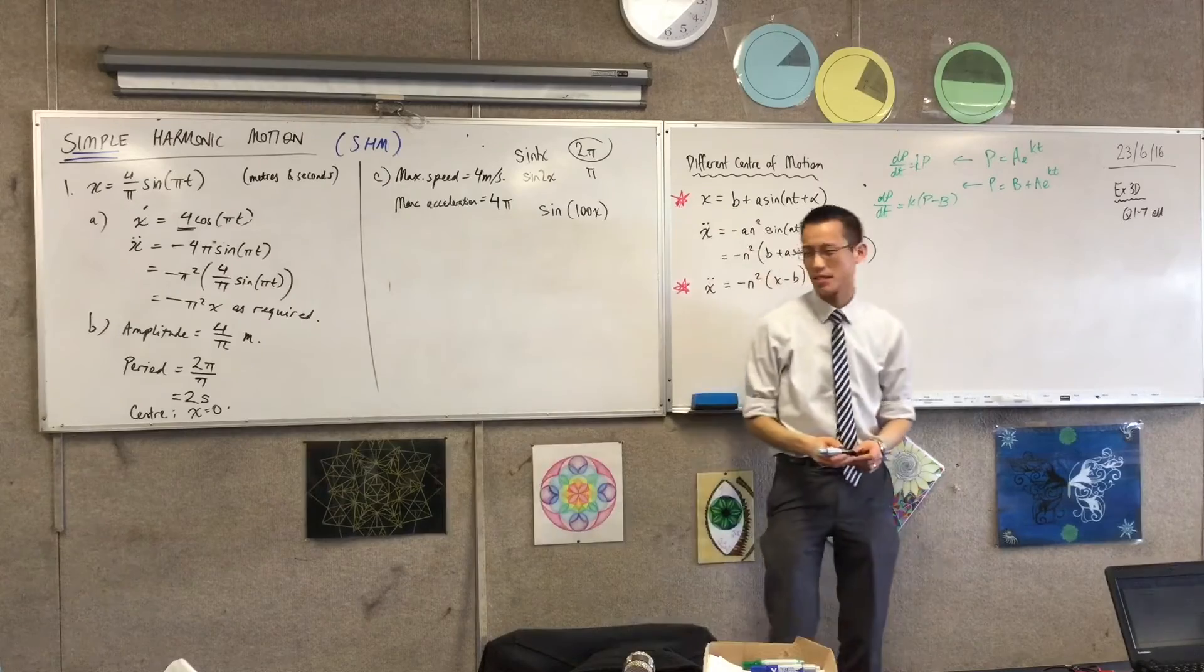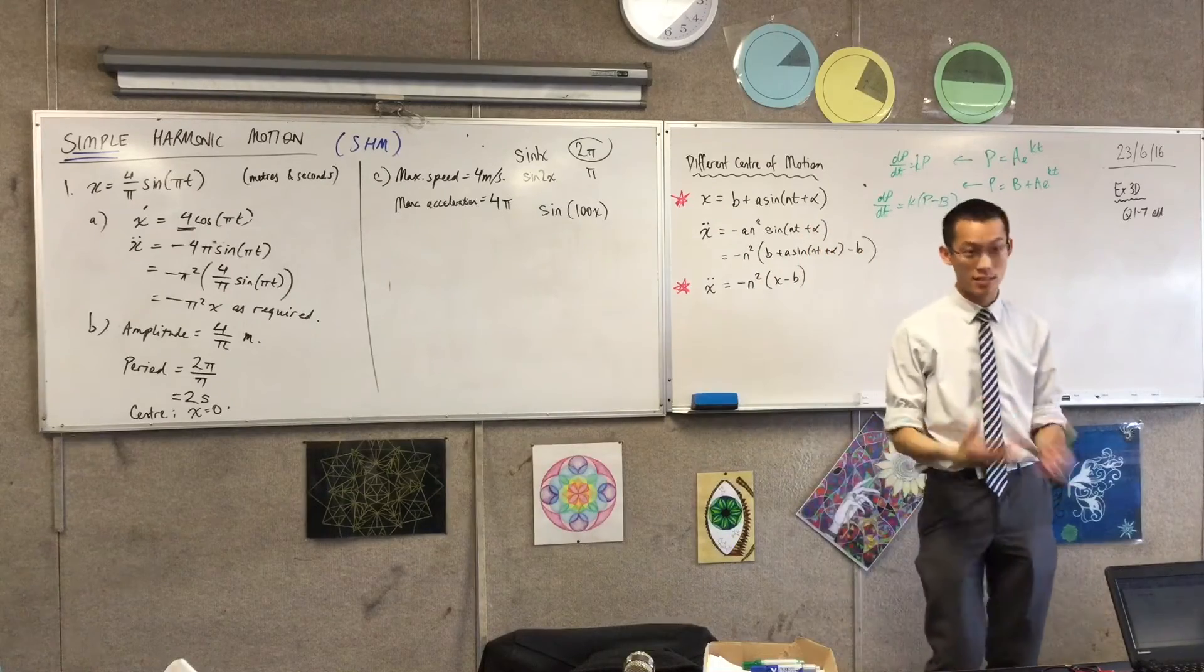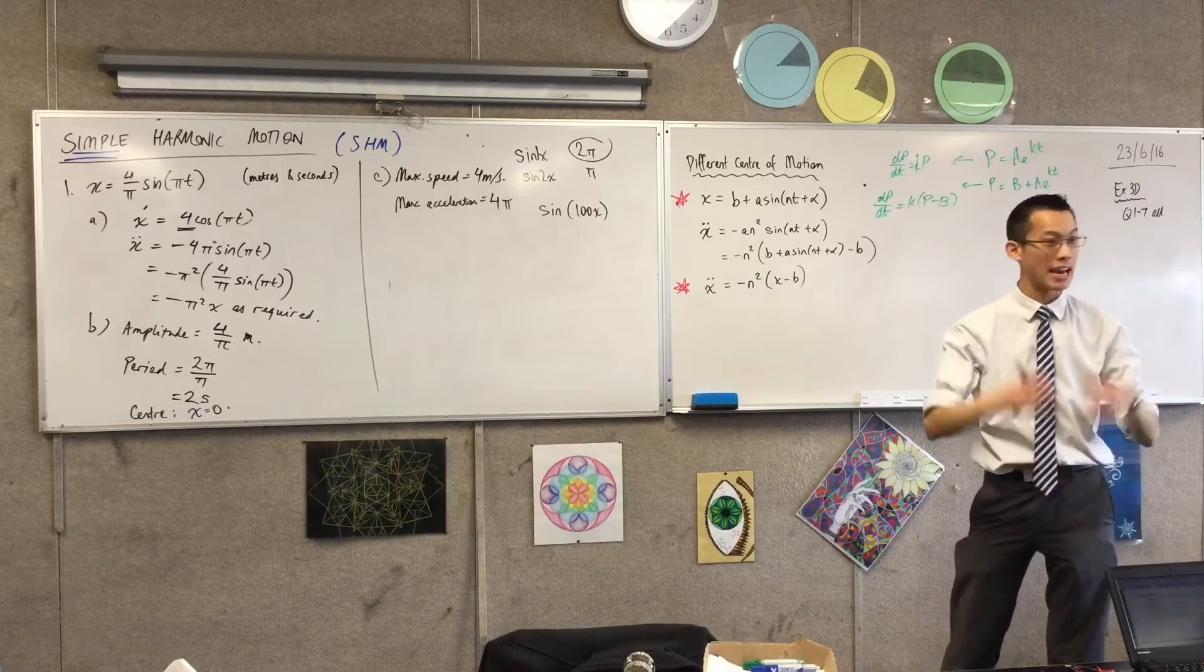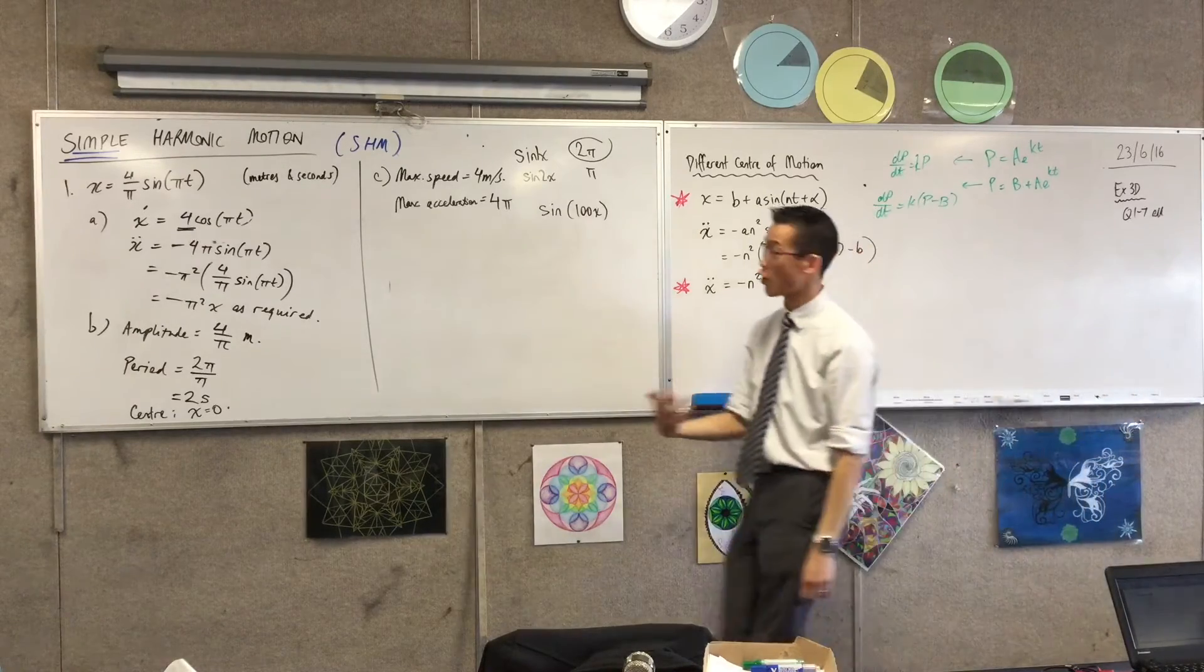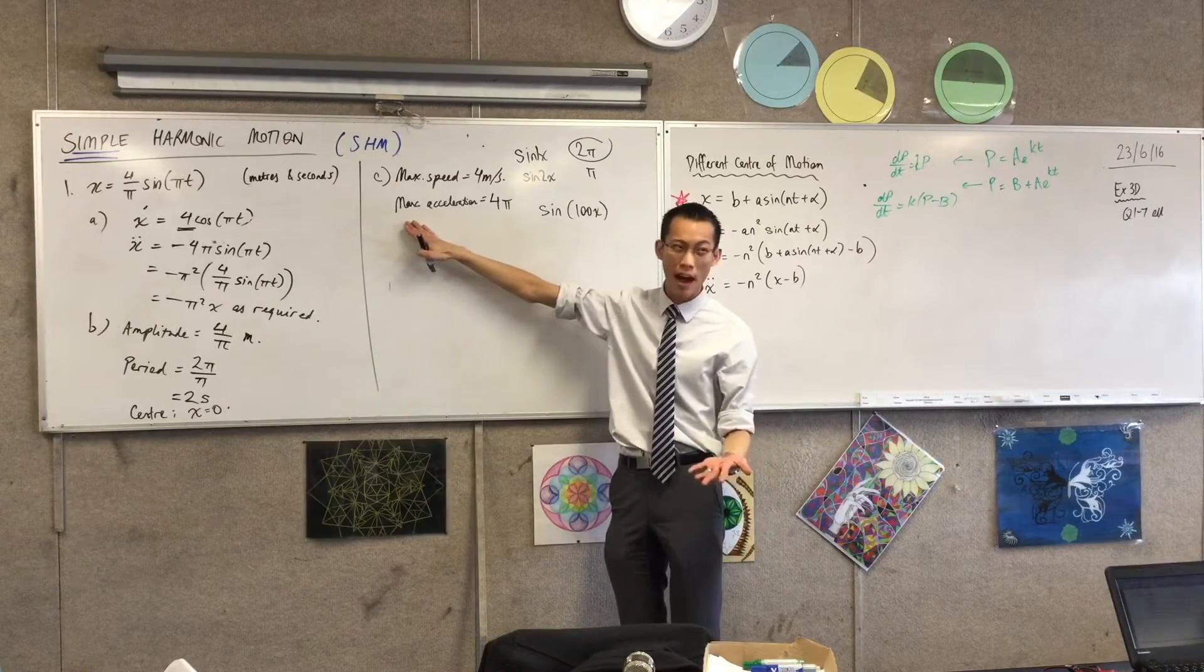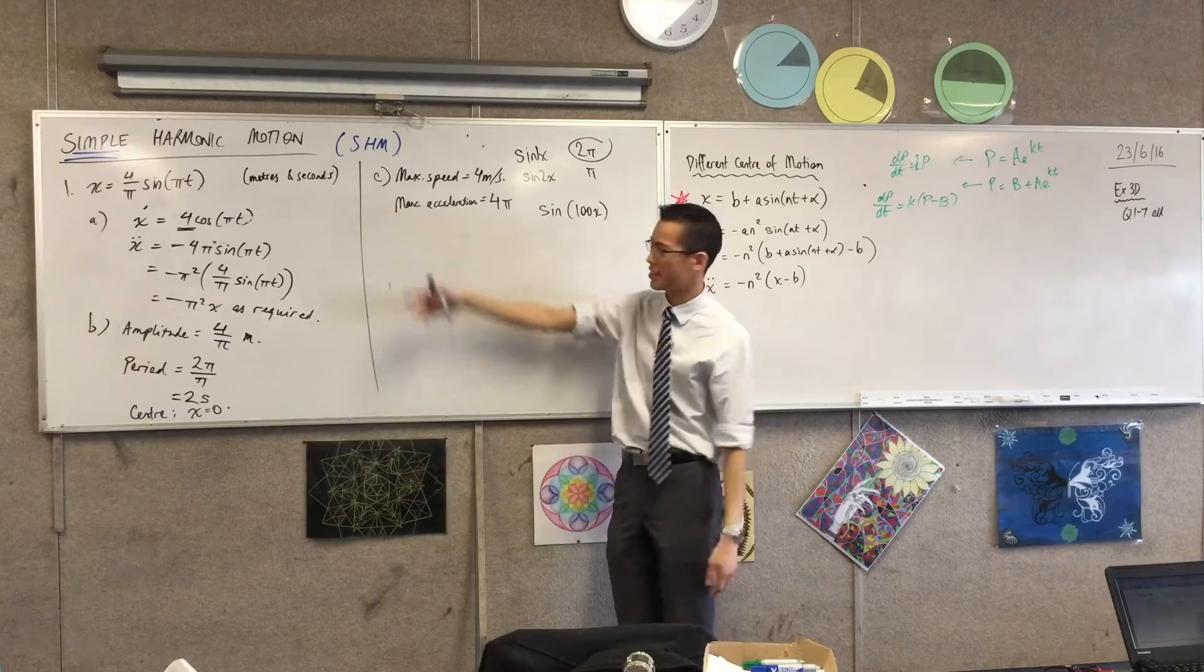Now, they've said maximum. We know that speed is a scalar. It doesn't worry about direction. Acceleration isn't a scalar. It actually does. The sign does matter. So therefore, if I'm looking for, yes, it's a vector. If I'm looking for a maximum, then, which is bigger, 4 pi or negative 4 pi? 4 pi. 4 pi is bigger, isn't it?